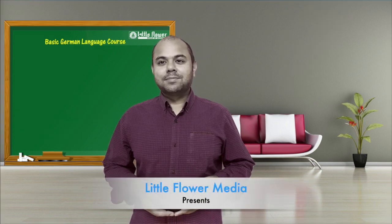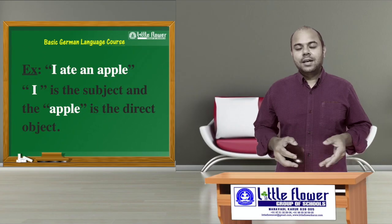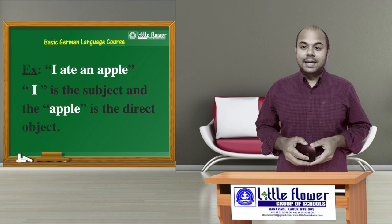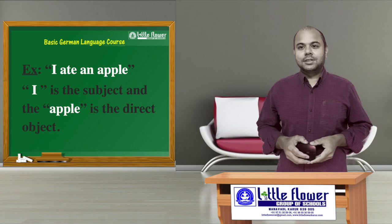The nominative is the basic form of the pronoun and it is used with the subject of the sentence. The subject is the person or thing performing the action of the verb. For example, in the sentence 'I ate an apple,' 'I' is the subject and 'the apple' is the direct object.